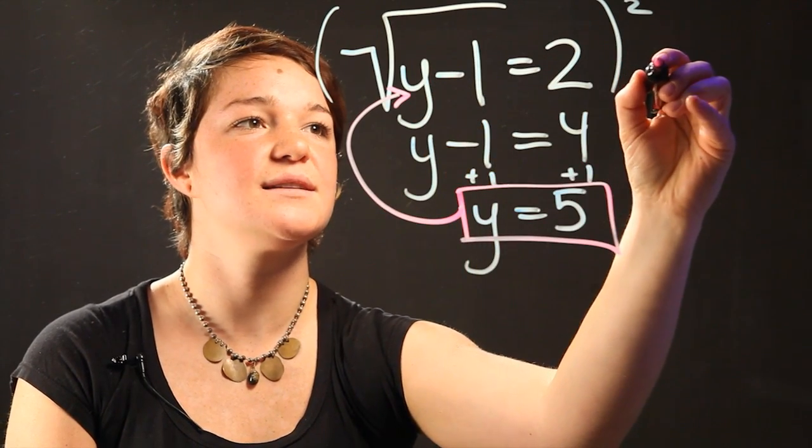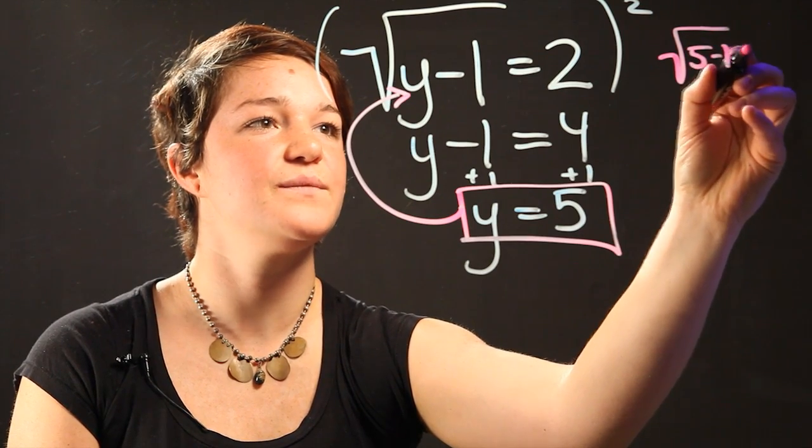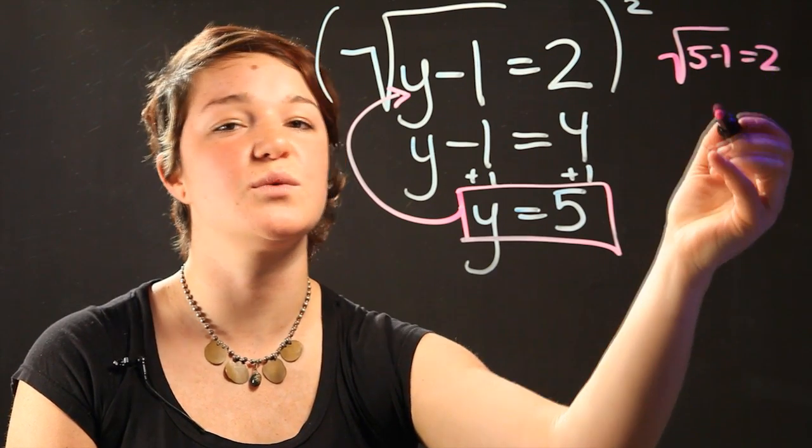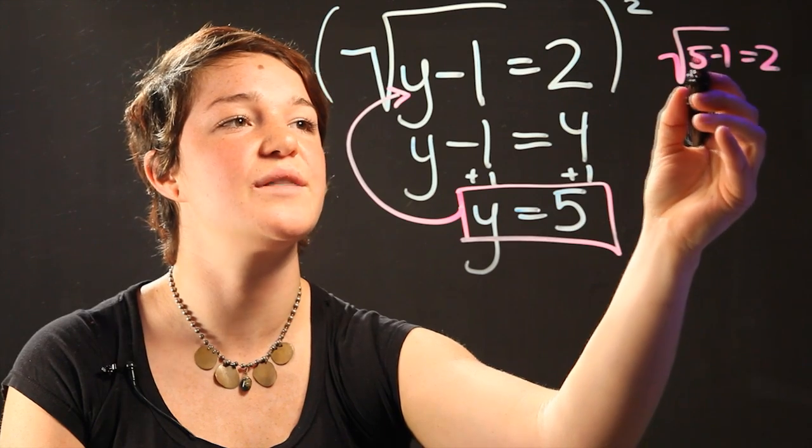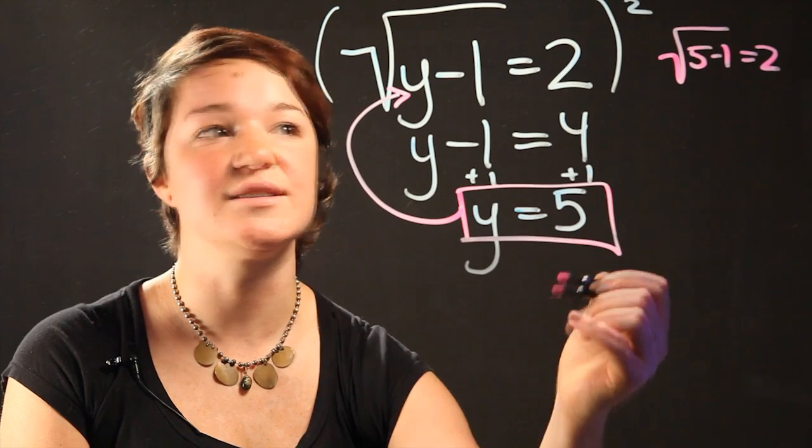In that case we get the square root of 5 minus 1 equals 2. And what we're checking here is whether both sides are actually equal, whether the answer that we got is true.